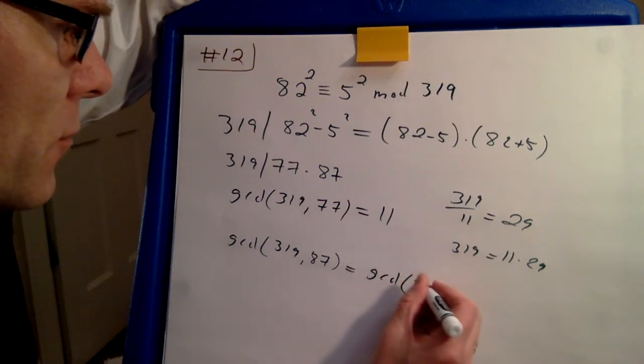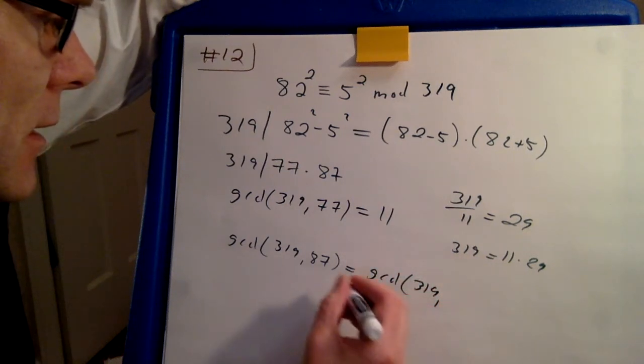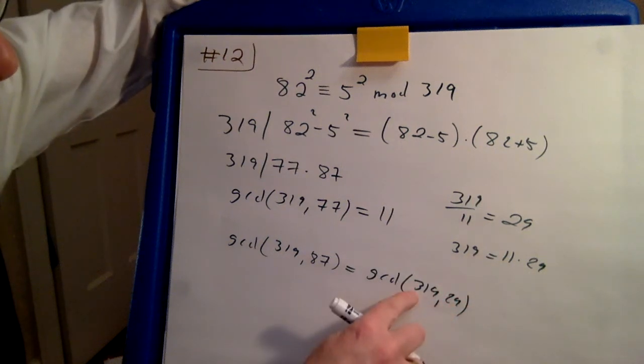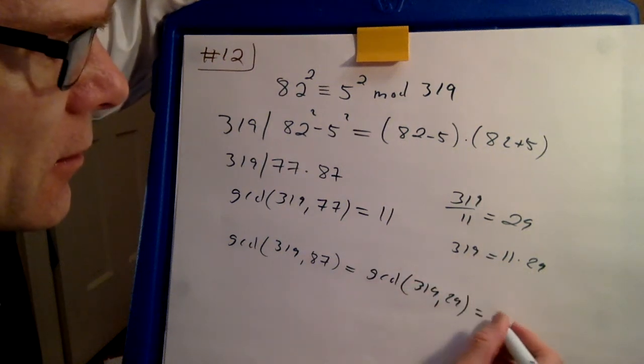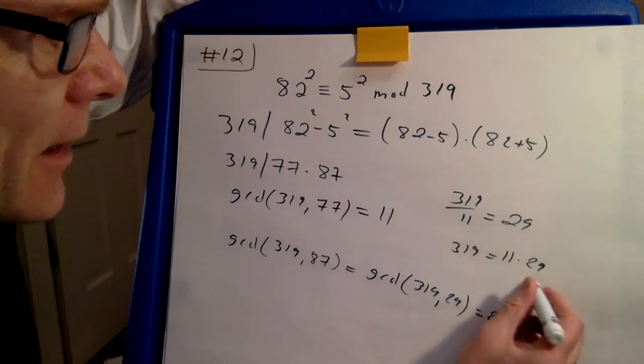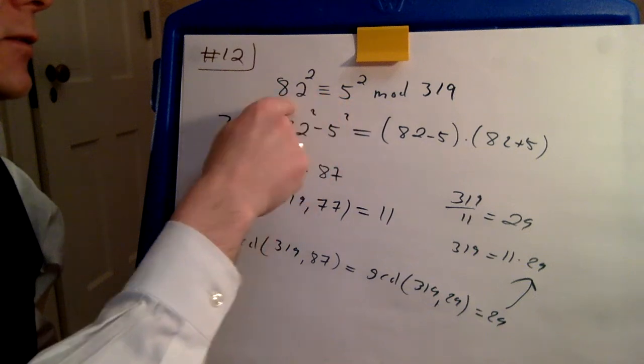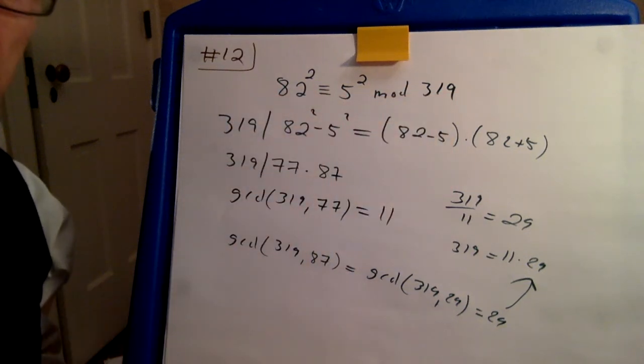So it is the greatest common divisor of 319 and 29. And now you look and say, ah look, 29 divides that. So that's another way to get that factor 29. Okay, so two squares congruent is very useful.